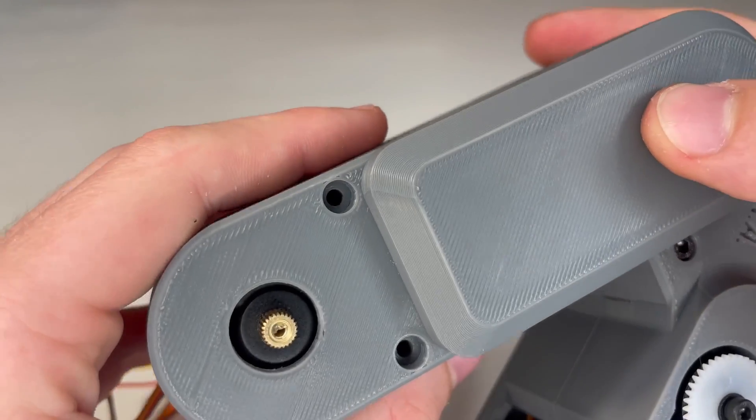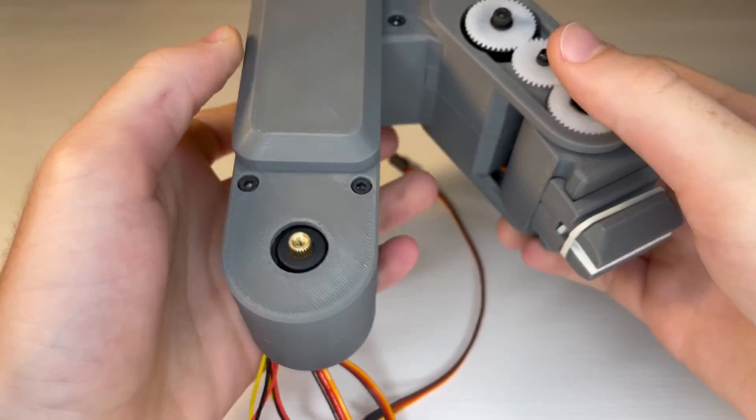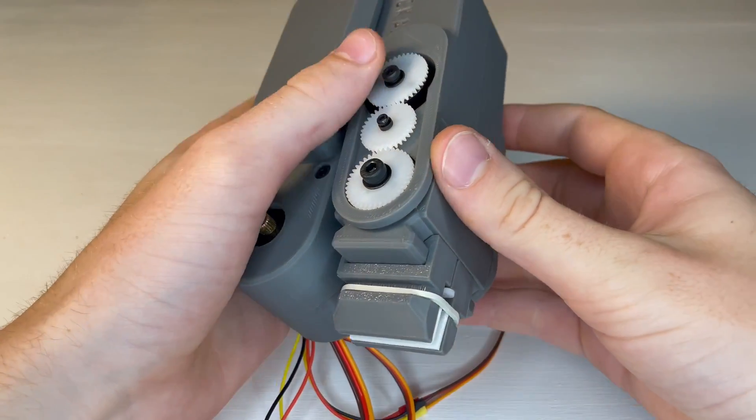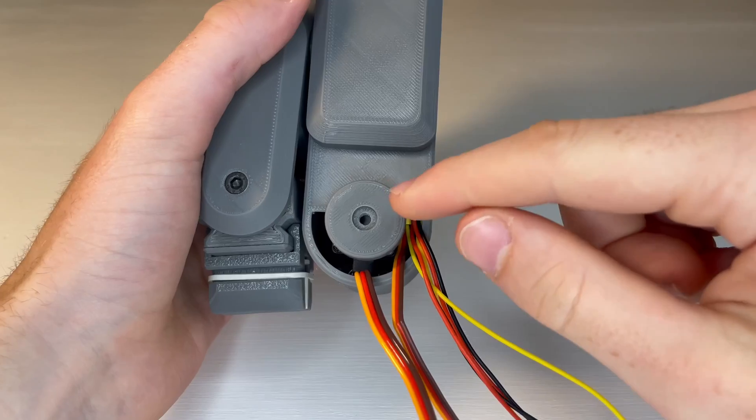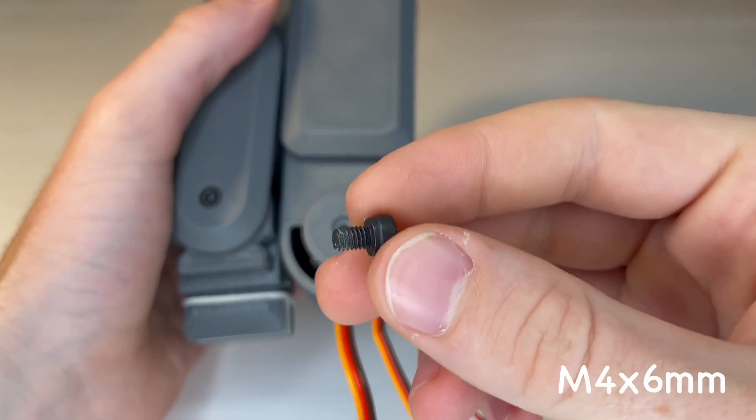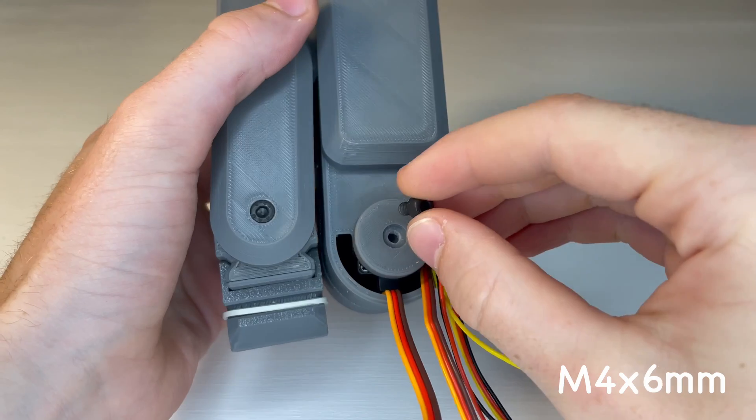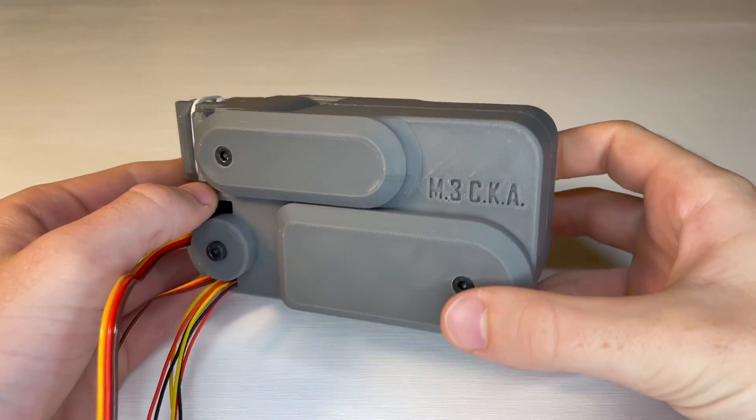And we can secure the two halves together by using two M3x30mm screws. And the last step to this part is to insert one M4x6mm screw into the hole by the servo wires. And now this assembly is done.